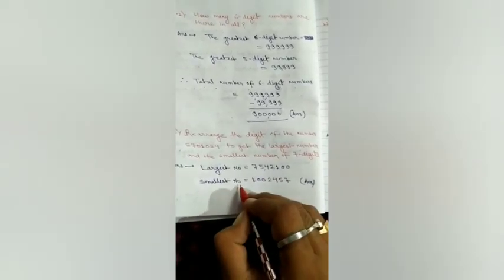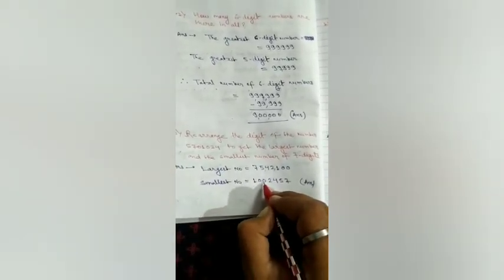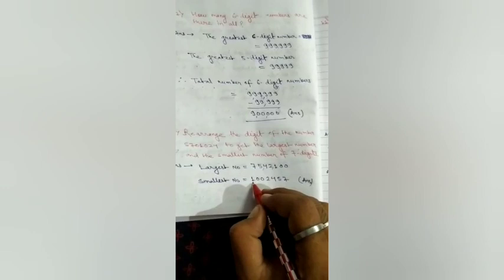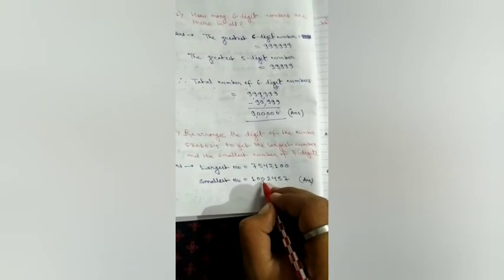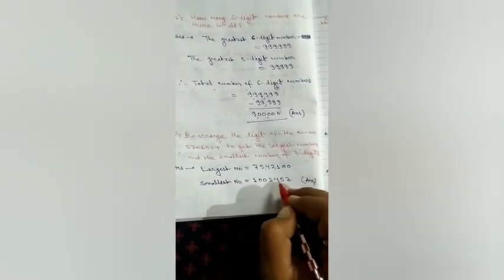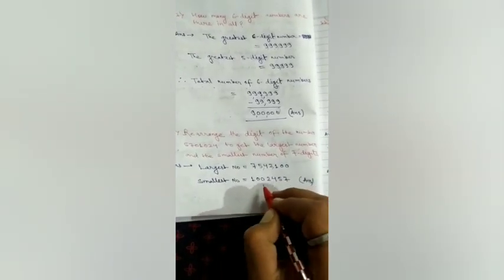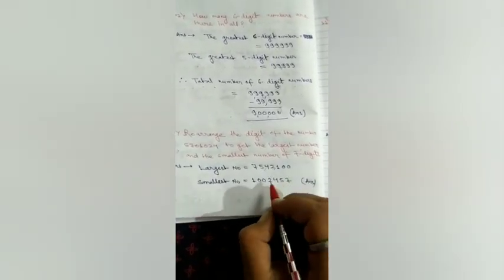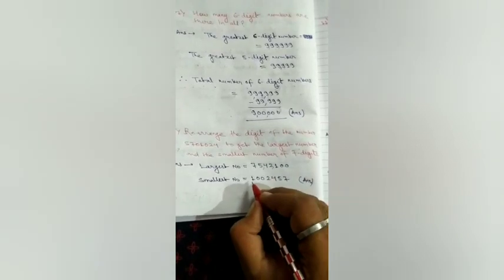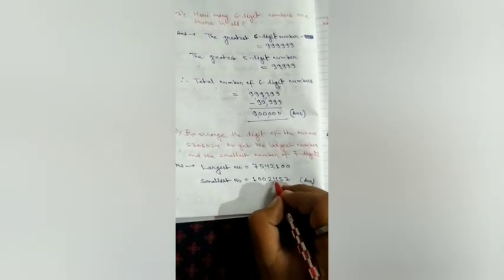And the smallest number, first you cannot put 0. So, first you have to put the next digit that is 1 and then the 2 zeros. Then 2, 4, 5 and 7. You have to write in ascending order. But first you cannot write 0. So, the number will be how much?